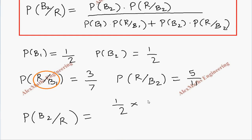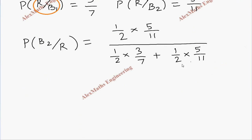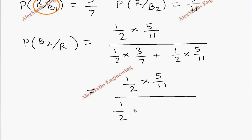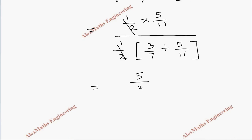P(B2 | R) equals one by two times five by eleven, divided by one by two times three by seven plus one by two times five by eleven. From the denominator we can take one by two common, which simplifies the calculation. After canceling one by two, we are left with three by seven plus five by eleven in the denominator.